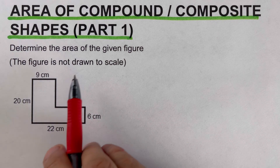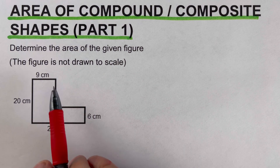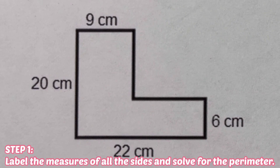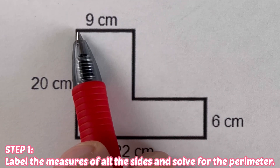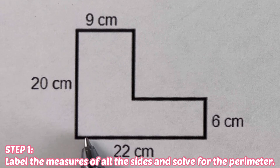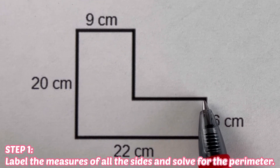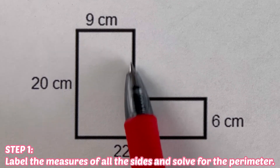Determine the area and perimeter of the given picture below. The figure is not drawn to scale. The first step is to label the measures of all the sides and solve for the perimeter. We have 9 on this side, this side is 20, this side is 22, and this one is 6.